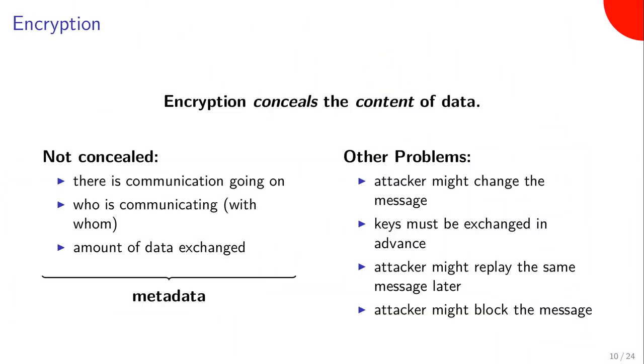There are more problems with encryption. One is that the attacker might change the message — protecting from changes is not the job of encryption. Another problem is that keys must be exchanged in advance. An attacker might simply record a message and later replay it to Bob. Or an attacker might block a message altogether, intercept it and throw it in the trash so it never arrives at Bob's side. The first problem — an attacker might change the message — leads me to the second part of my talk: authentication.